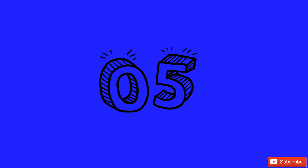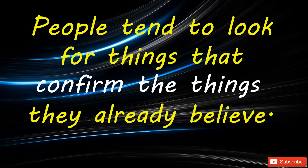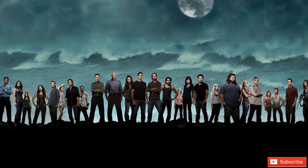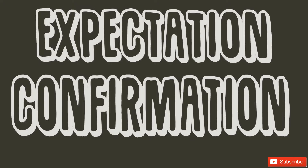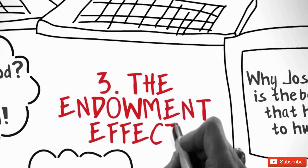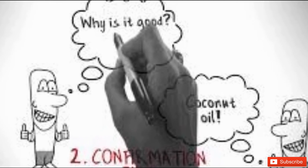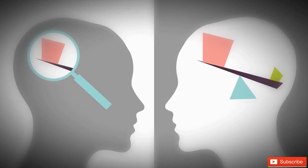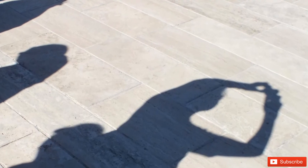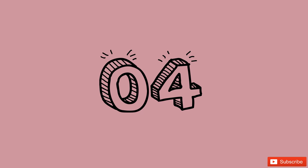Number 5: People tend to look for things that confirm what they already believe. People typically look for things that confirm their existing beliefs and ignore information that contradicts what they already think. This is known as expectation confirmation, and it plays a major role in what is known as confirmation bias — a type of cognitive bias. This tendency leads us to sometimes avoid information that challenges the way we think about the world.